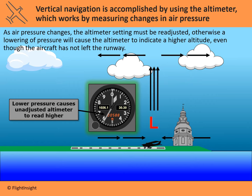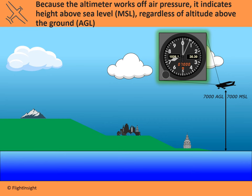Lower pressure, when you don't adjust the altimeter, is going to cause your altimeter to read higher than you actually are, so it will have to be readjusted periodically. Because the altimeter works off of air pressure, it indicates height above sea level regardless of the altitude you're flying above the ground.